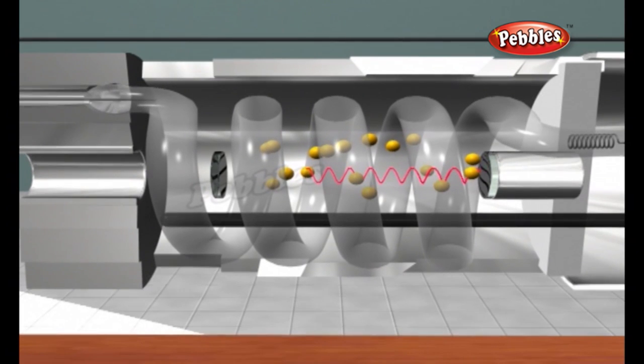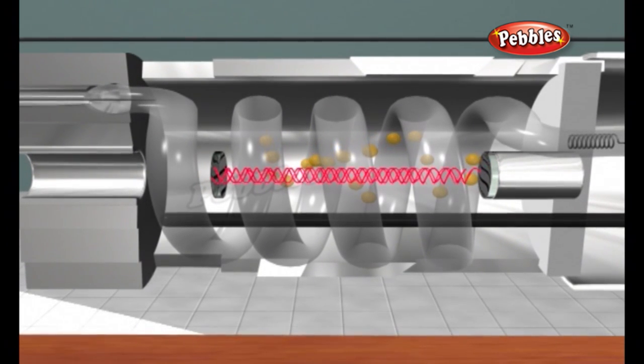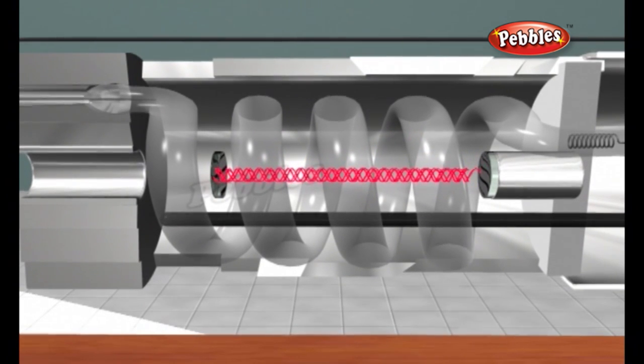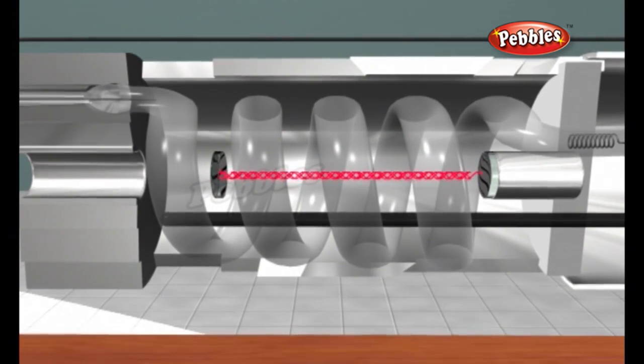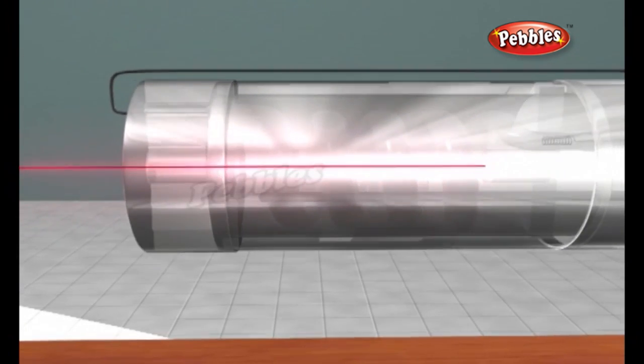The other key to a laser is a pair of mirrors, one at each end of the lasing medium. Photons with a very specific wavelength and phase reflect off the mirrors to travel back and forth through the lasing medium. In the process, they stimulate other electrons to make the downward energy jump and cause the emission of more photons of the same wavelength and phase.